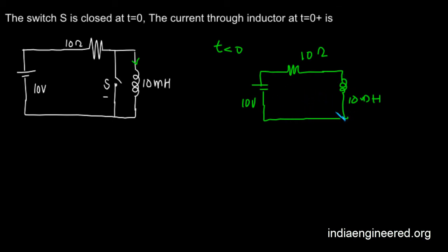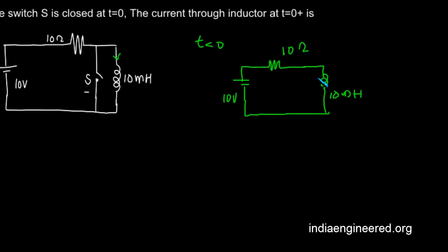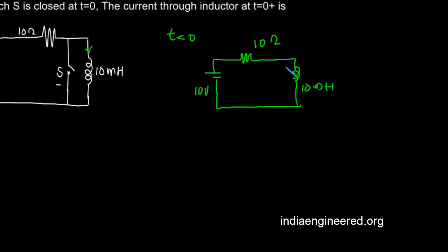That means it has attained its steady state at t less than zero. That means the current will be 10 volt by 10 ohm, that will be one ampere.